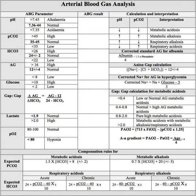So those are the first steps in looking at an ABG. Let's assume that they have a metabolic acidosis, that it's not a mixed picture, and that they have compensated appropriately. So what are the consequences of a metabolic acidosis? Think of some patients that you've seen with metabolic acidosis — what do they look like?